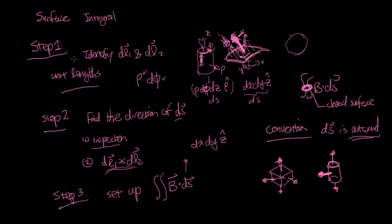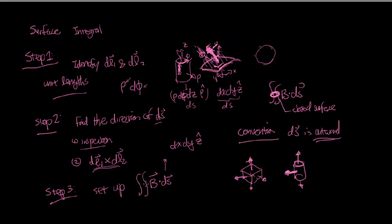As a quick summary: identify the two differential vectors DL1 and DL2 that define the surface. By elimination, the direction of DS is the remaining third dimension — for a cylinder with phi and Z, DS is naturally in the rho direction. You can confirm this by inspection or by taking the cross product DL1 × DL2. Then set up the dot product of your field with DS and evaluate the two-dimensional integral. Finally, remember: if you have the closed surface circle notation, and you're ever in doubt about the direction of DS, always choose the direction pointing outward.